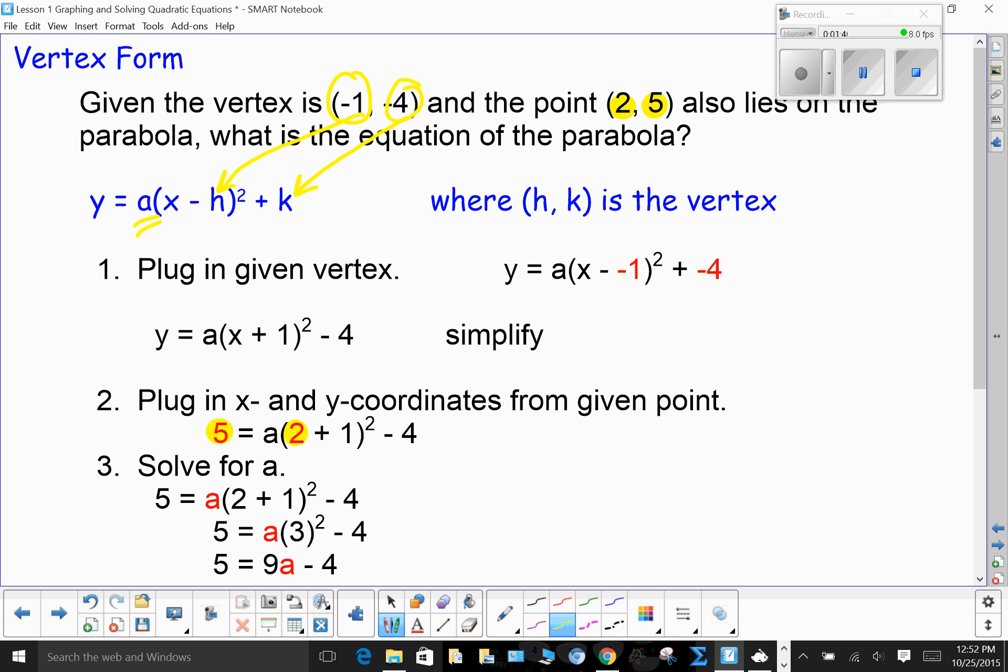Well, we want the equation in terms of x and y. So that means we've got to figure out what a equals. For that, we need one other point. That's where our handy-dandy point (2, 5) comes in. We plug the 2 in for the x and the 5 in for the y. Now we have one unknown and that's a. We solve for a using normal algebraic equation solving.